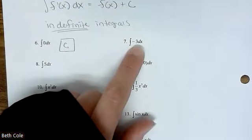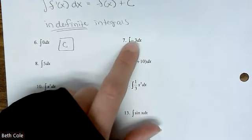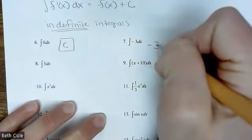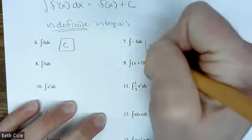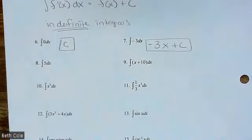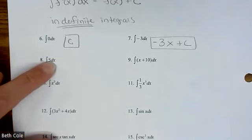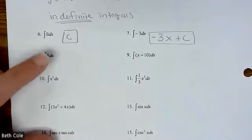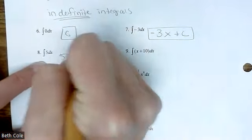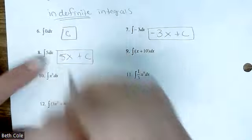All right? So look at number 7. You need to come up with a function that if you took the derivative, you would get negative 3. Good. Negative 3x plus c. If you took the derivative of that, you would get negative 3. All right. Hold on. Now, this one, you need a function that if you did the derivative, you would get 5 as the answer. Good. 5x plus c.